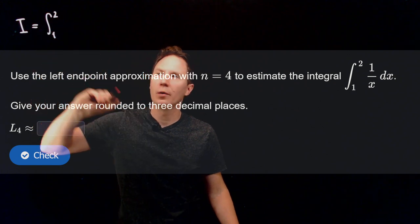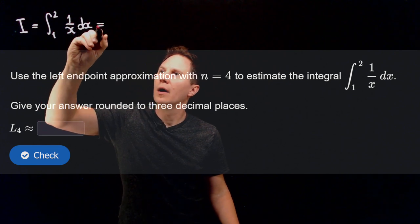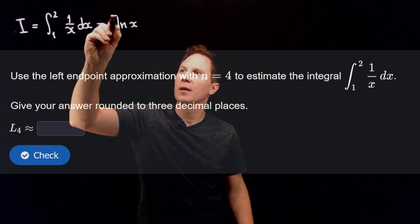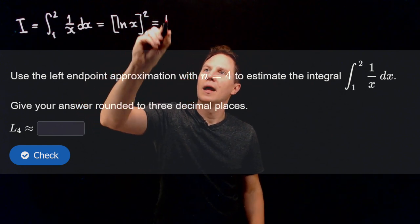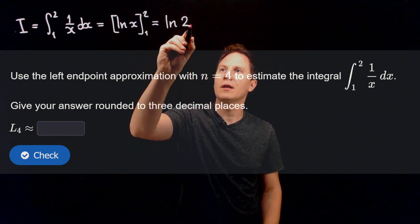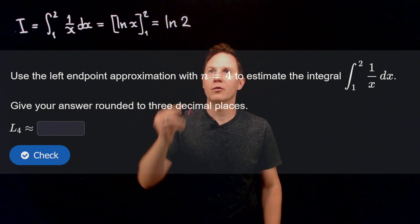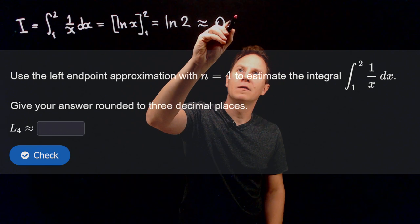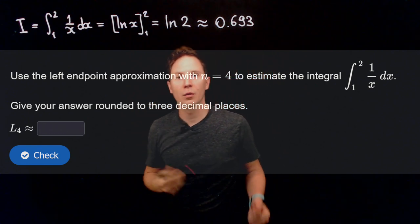We have the integral from 1 to 2 of 1 over x dx, which we can actually evaluate exactly. As we know, an antiderivative is the natural logarithm of x, so the fundamental theorem of calculus gives us the value as the natural logarithm of 2 minus the natural logarithm of 1, but that's just 0. Therefore the exact value is ln(2), which is approximately 0.693 to three decimal places.